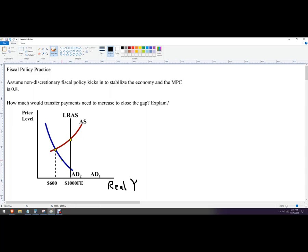For whatever reason, our equilibrium is over here. So we're off by the difference here. We're off by 400. That's the amount of the recession. So we need to shift aggregate demand over by $400.